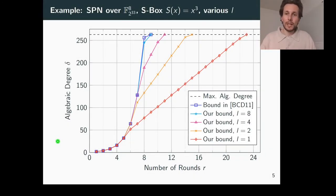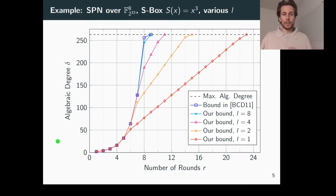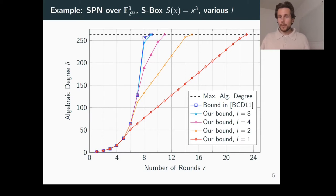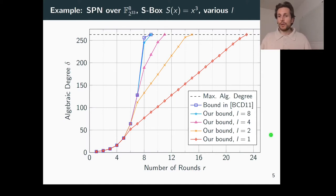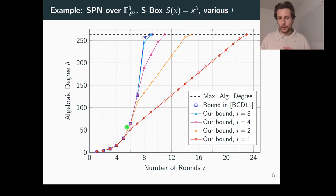If you'd ask me about a visualization of our results on a single slide, I'd answer with this one. The diagram shows several bounds on algebraic degree for an SPN over F2 to the 33 with 8 words and with the cubing function as the S-box. The horizontal black dashed line shows the maximum algebraic degree, the blue line shows the BCD bound, and the other lines depict our bound for various degrees of the linear layer ranging from 1 to 8. One particular novelty of our bound visible in this diagram is that there are potentially two phases of algebraic degree growth: a phase of exponential growth for the first few rounds, followed by a phase of linear growth — and our bound makes these two phases visible.